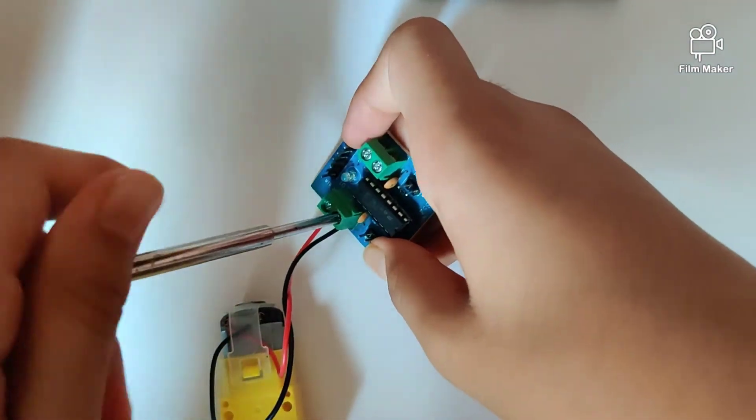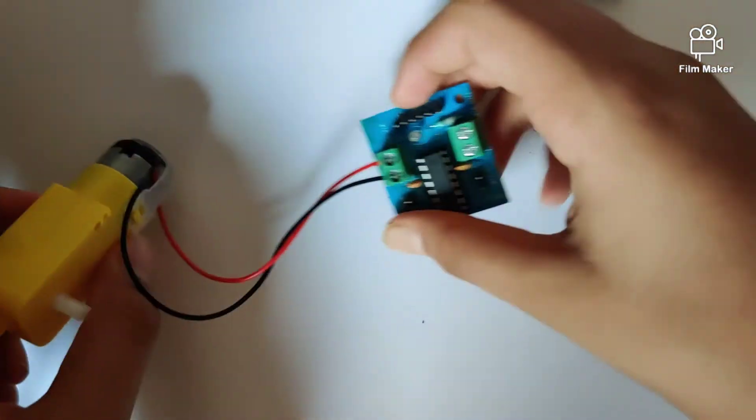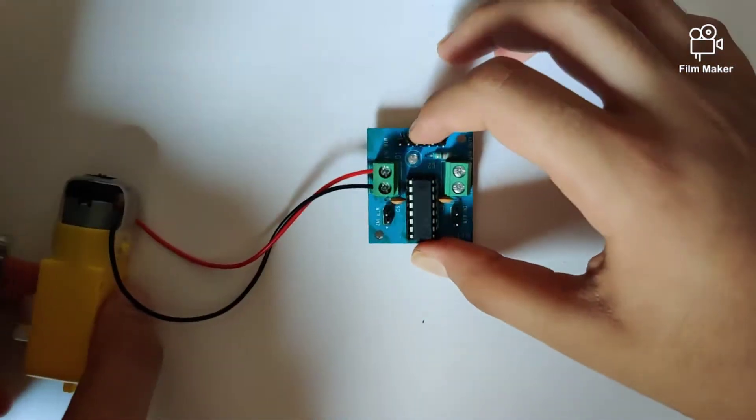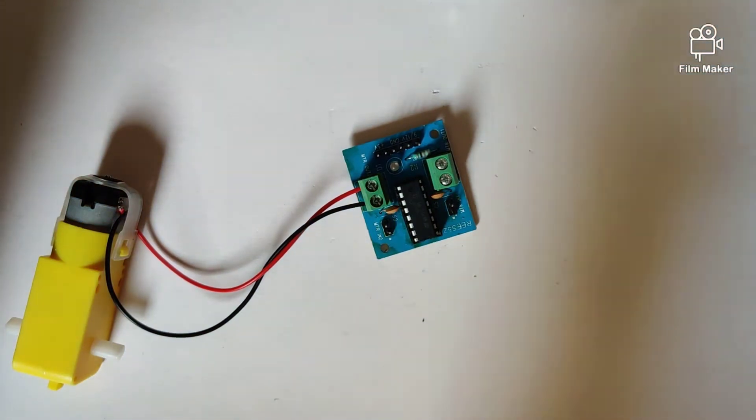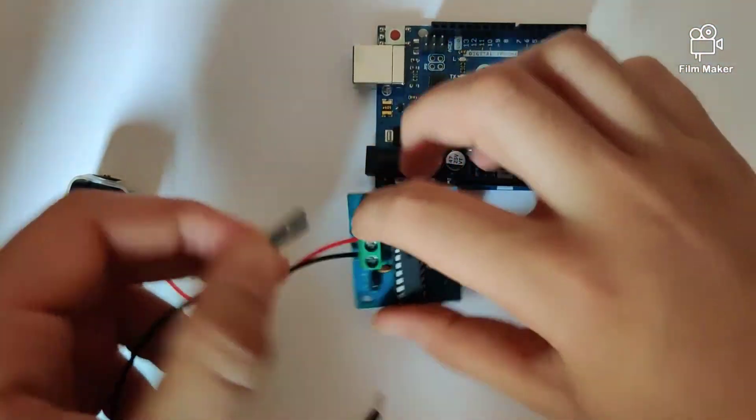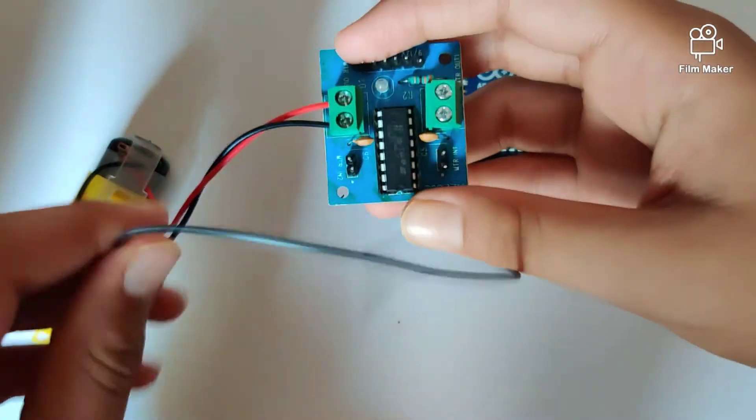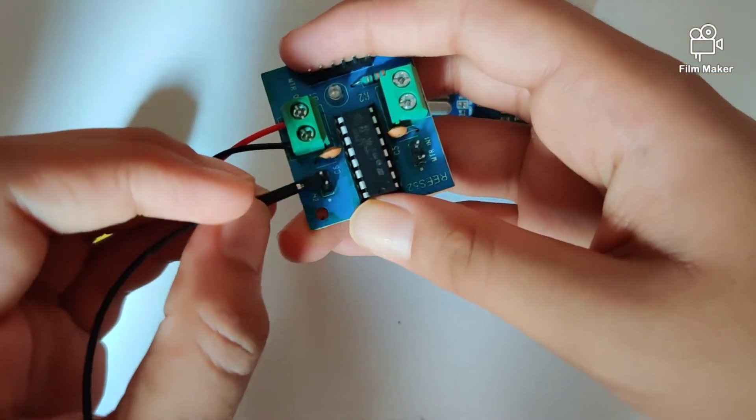Alright, so once we have done screwing the wires into the module, we will connect our motor driver to the Arduino Uno. So on the side we have connected these two wires, there are these two pins right here.